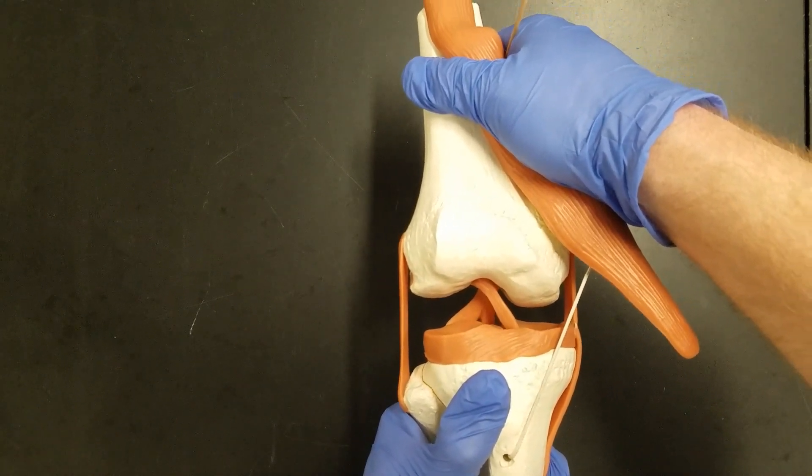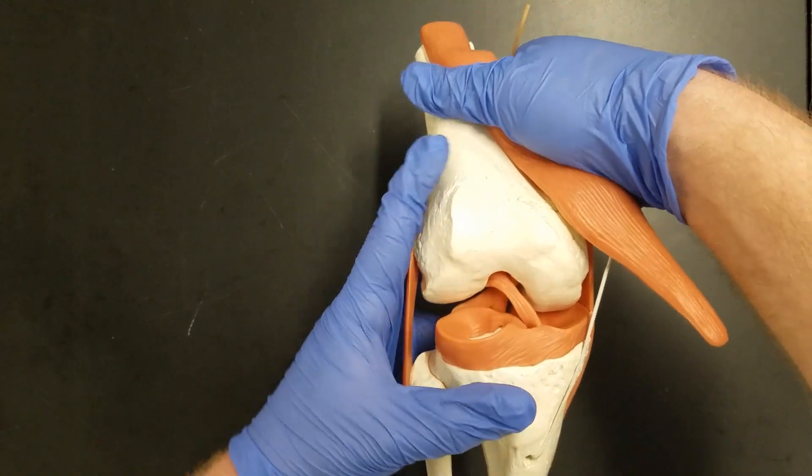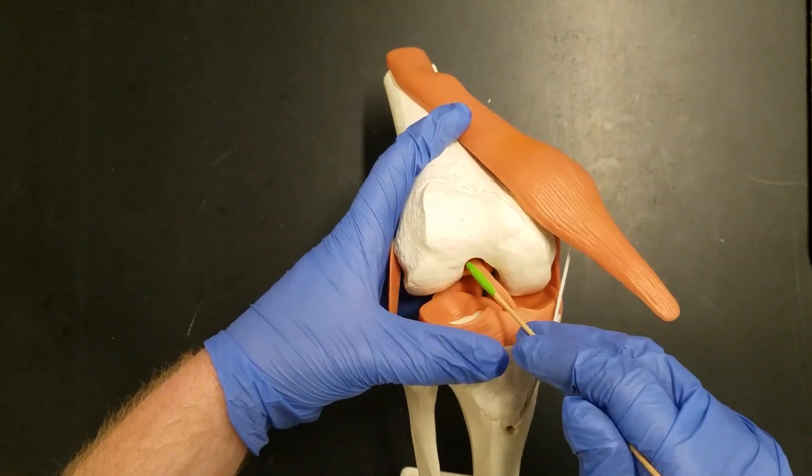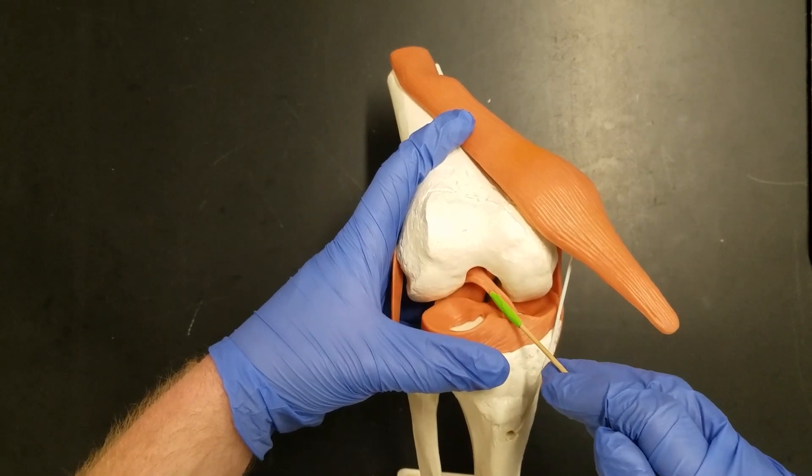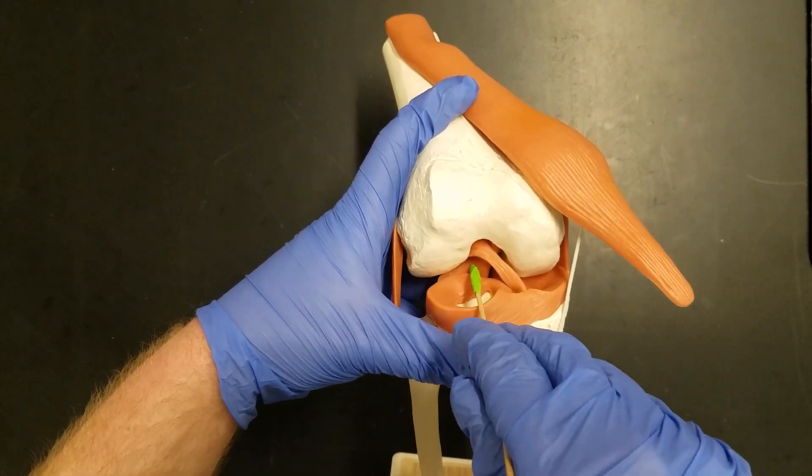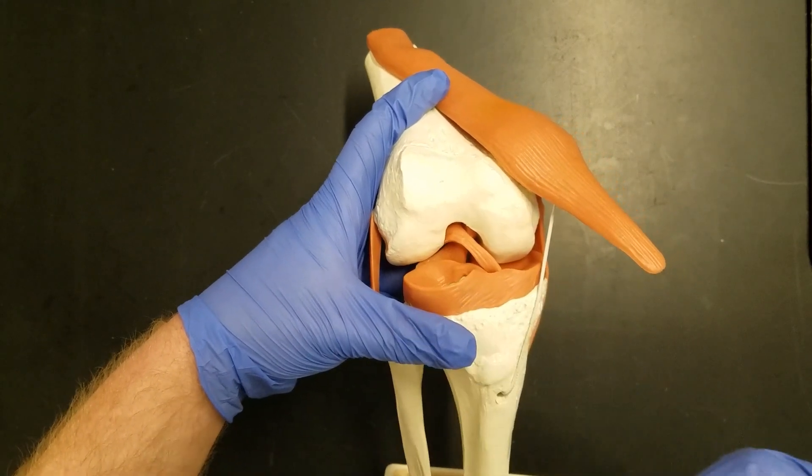These two ligaments are the cruciate ligaments. Cruciate comes from the Latin word crux which means to cross. The one that crosses over in the front is the anterior cruciate ligament or ACL. The crossing ligament in the back is the posterior cruciate ligament or PCL.